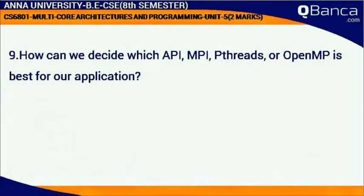How can we decide which API — MPI, pthreads, or OpenMP — is best for our application?